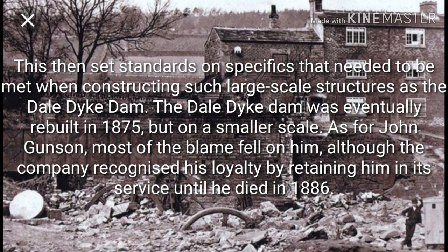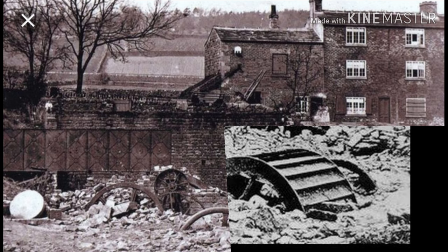The Dale Dyke Dam was eventually rebuilt in 1875, but on a smaller scale. As for John Gunson, most of the blame fell on him, although the company recognised his loyalty by retaining him in its service until he died in 1886. The government started a board of inundation commissioners to pass judgment on the compensation claims against the waterworks. They also arbitrated 7,500 claims for the loss of life and property, which totalled £455,000. All but 650 claims were settled without recourse to the arbitration process, but those 650 claims took almost six months to process.